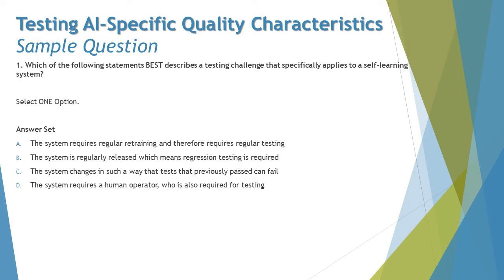Option A says: the system requires regular retraining and therefore requires regular testing. That's not the right answer because retraining cannot be described as self-learning at all. Self-learning means the system learns on its own without requiring your effort or intervention.